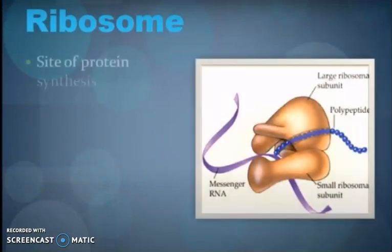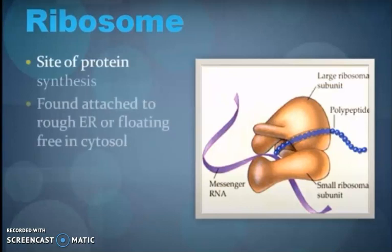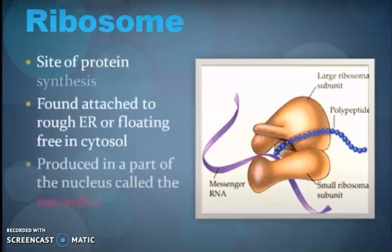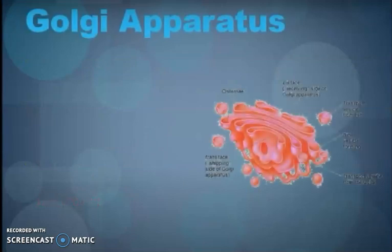Ribosomes are the site of protein synthesis. They can be attached to the rough endoplasmic reticulum or float freely in the cytosol. They are produced in a part of the nucleus called the nucleolus. That is why they are referred to as protein machinery, or protein factories.